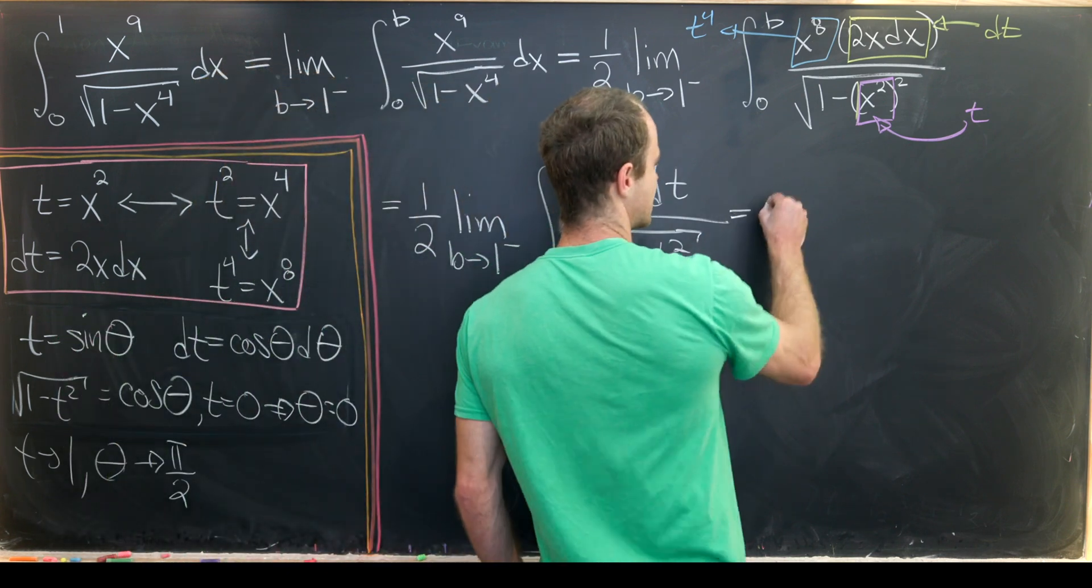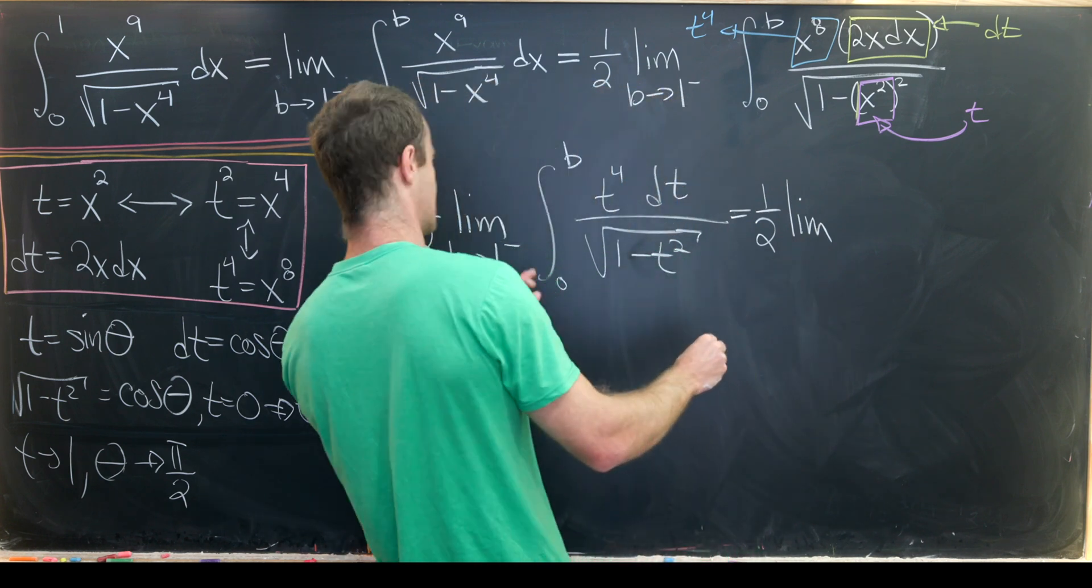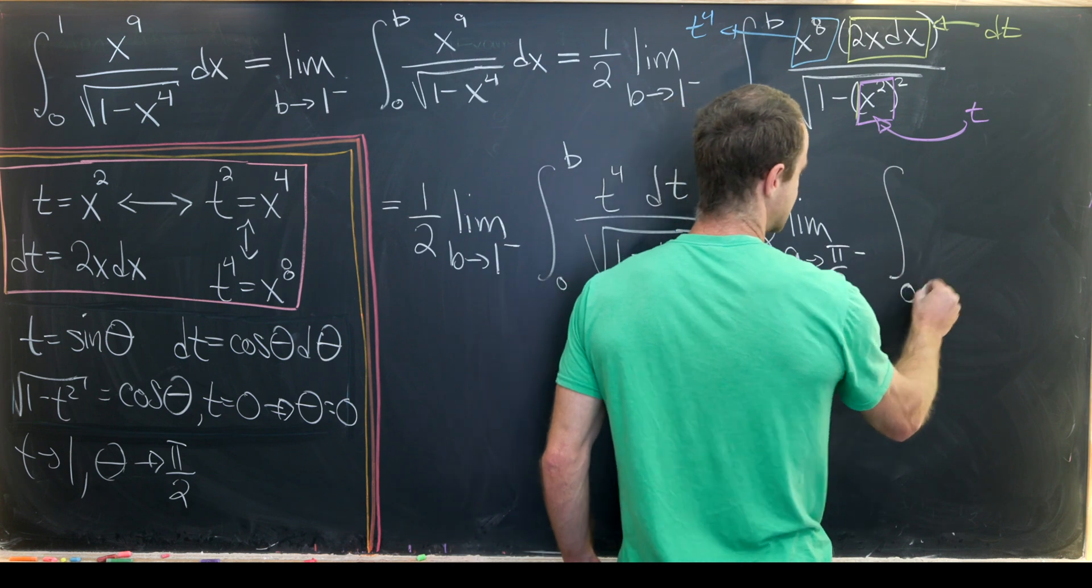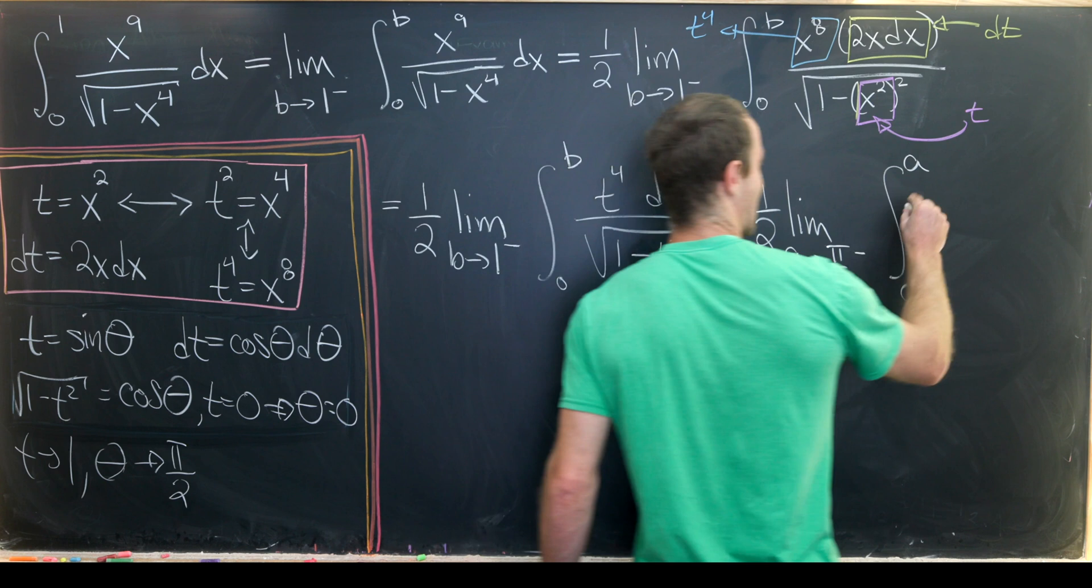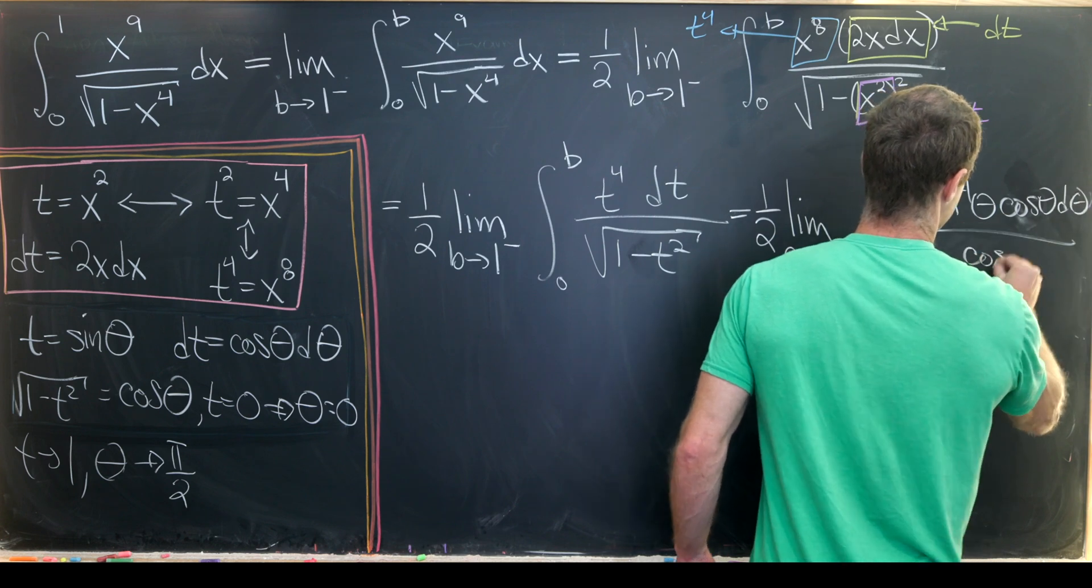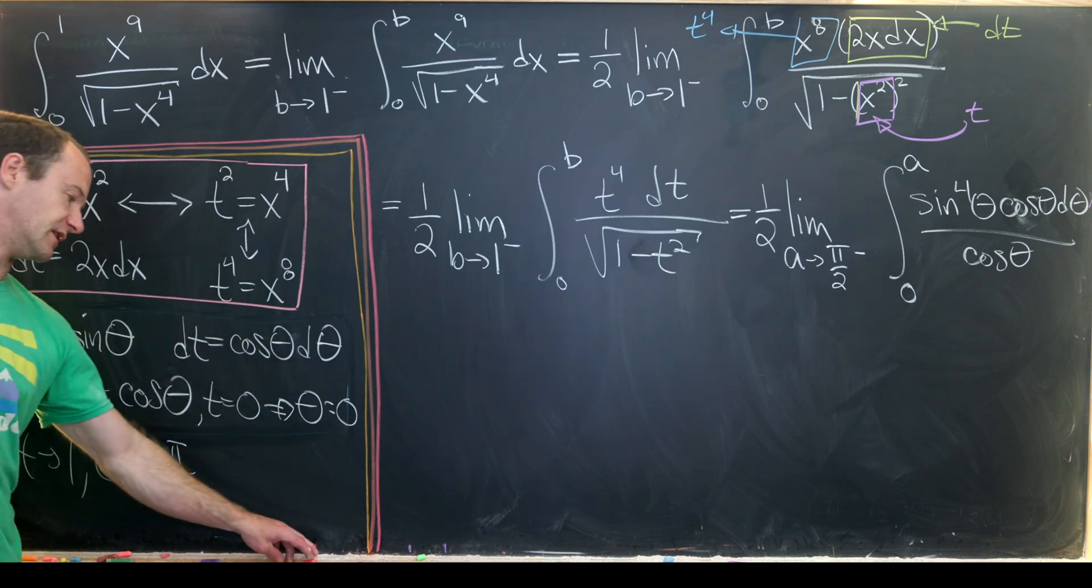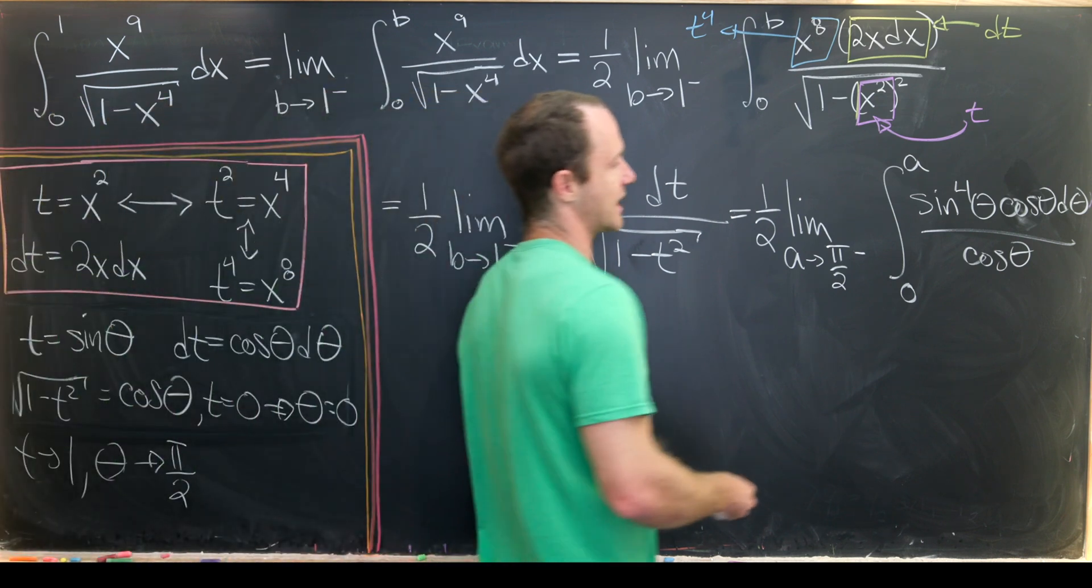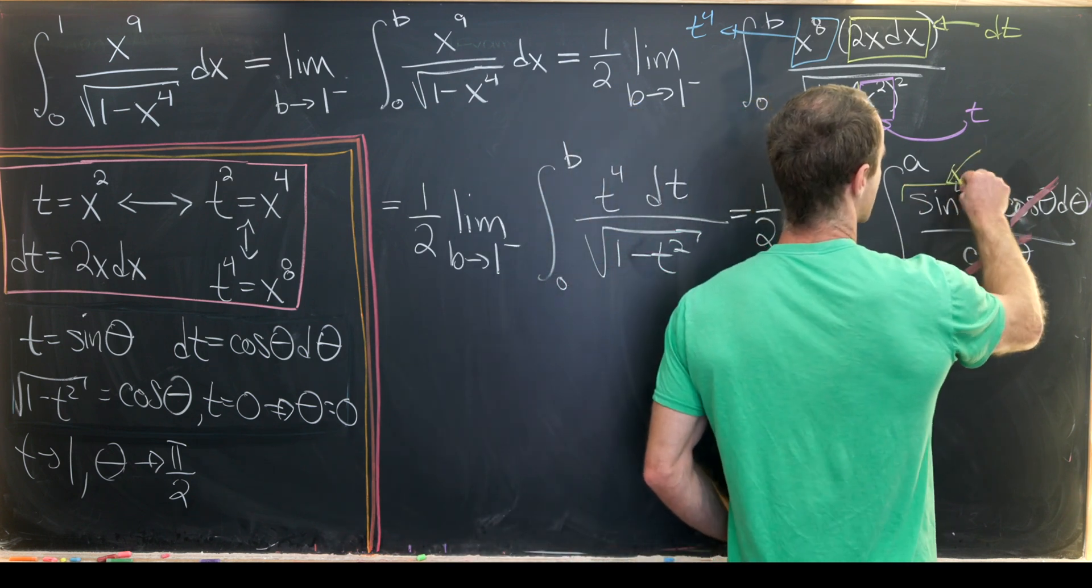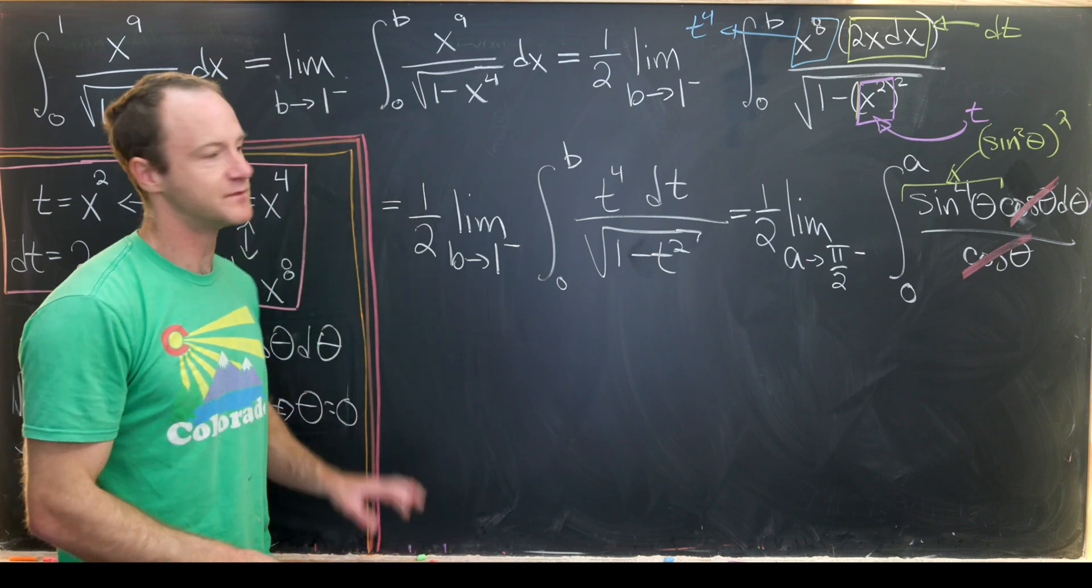This allows us to rewrite this as 1/2, the limit as a approaches π/2 from below, the integral from 0 to a of sin^4(θ) cos(θ)dθ over cos(θ). The cosine in the numerator comes from the differential, and in the denominator from the trig identity. We can simplify here, then think about sin^4 as (sin²θ)² and apply a power reducing formula.